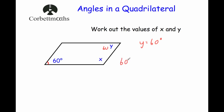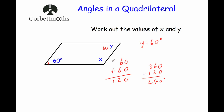So we do 60 plus 60, which is equal to 120. If we take that away from 360 degrees, that leaves us with 240 degrees. So X and the opposite angle together add up to 240 degrees. If we divide that by two — 2 divided by 2 is 1, 4 divided by 2 is 2, 0 divided by 2 is 0 — angle X is equal to 120 degrees.